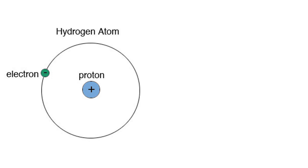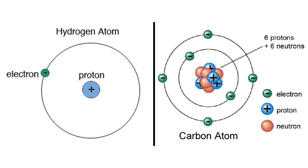There are many types of atoms called elements. Each element has a unique number of protons — its atomic number. Hydrogen, the lightest element, for example, has the atomic number 1 because it has one proton in its nucleus. Carbon, the most important element for life, on the other hand, has six protons. Its atomic number is six.